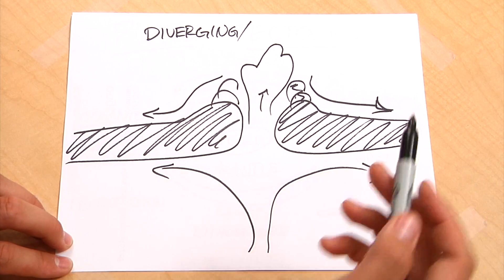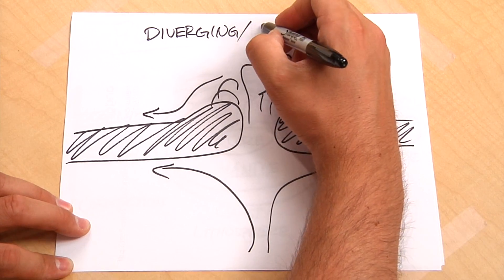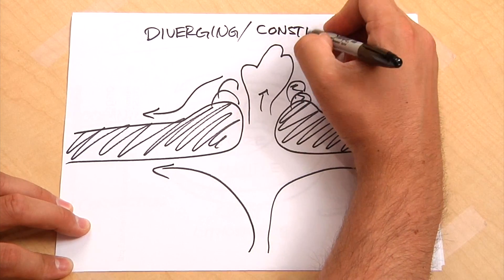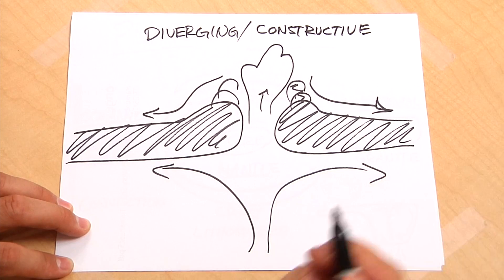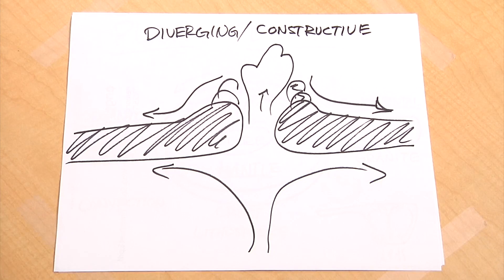So diverging boundary, but because new plate material is being created here, we also like to call it a constructive, constructive plate boundary.